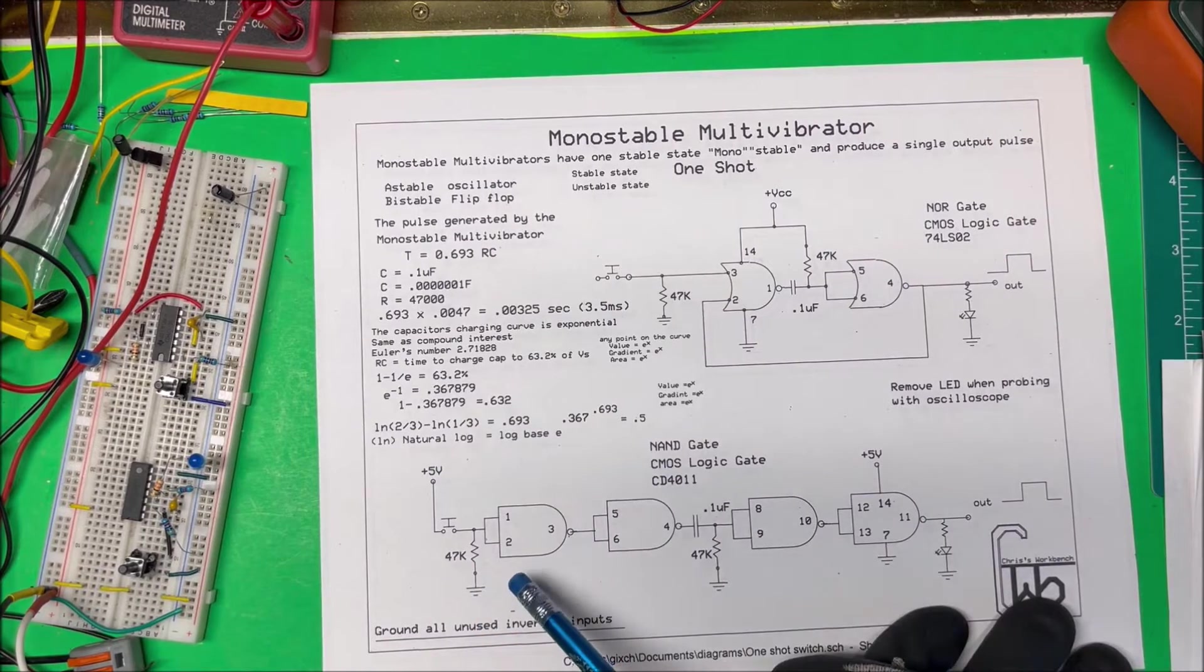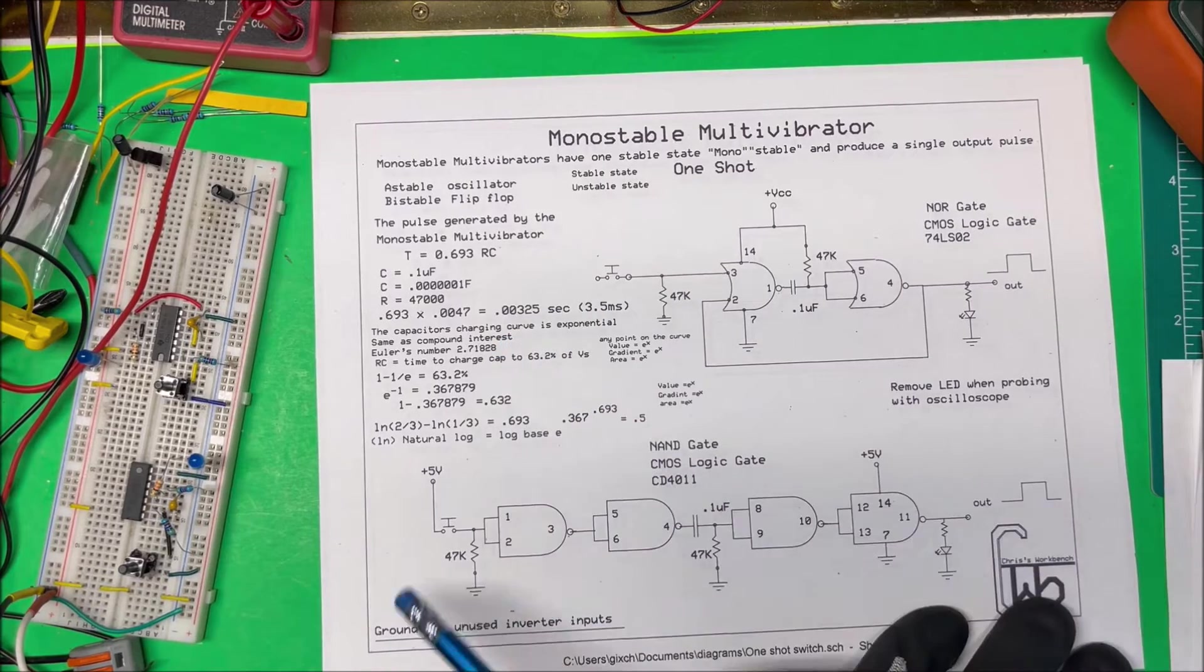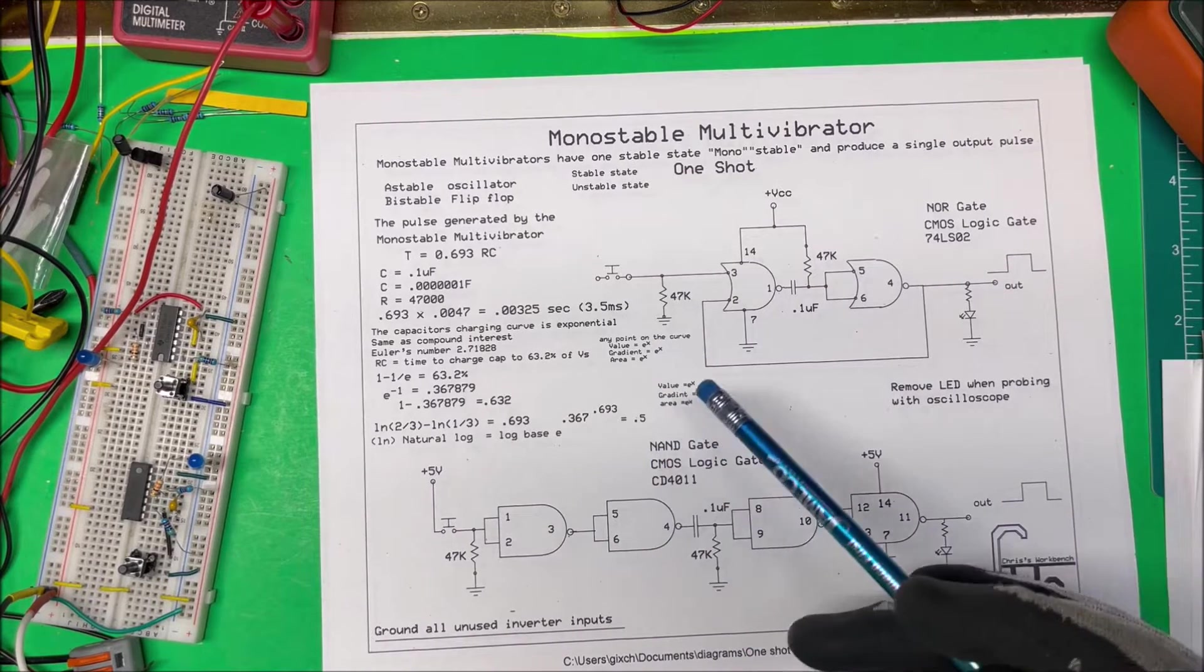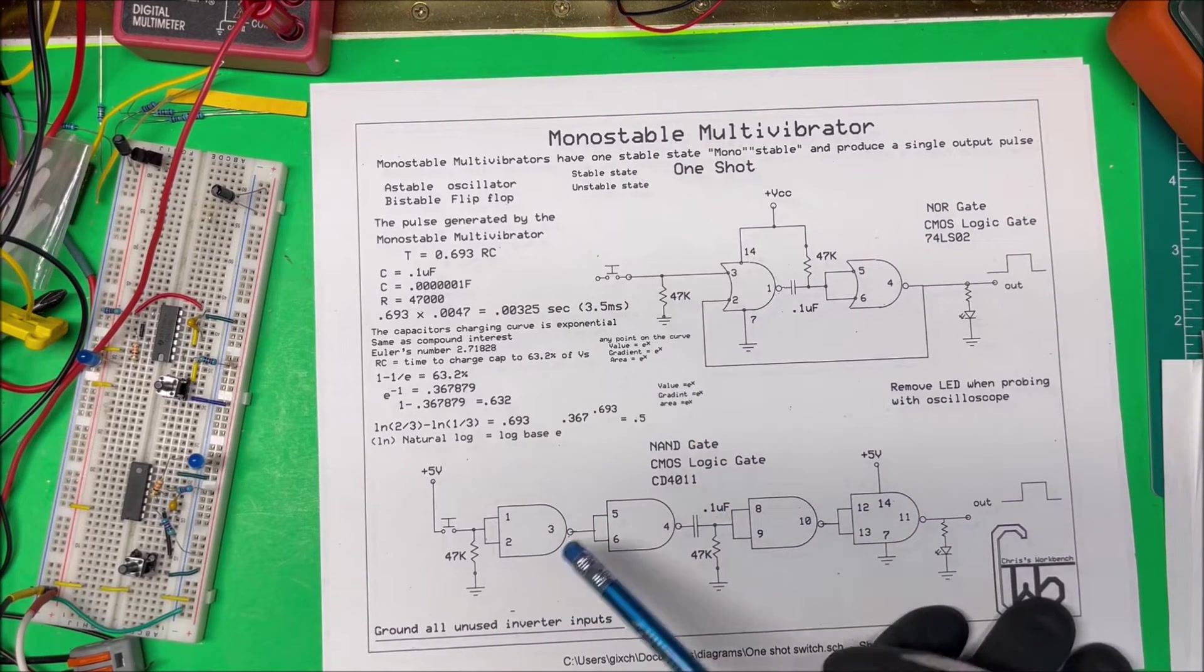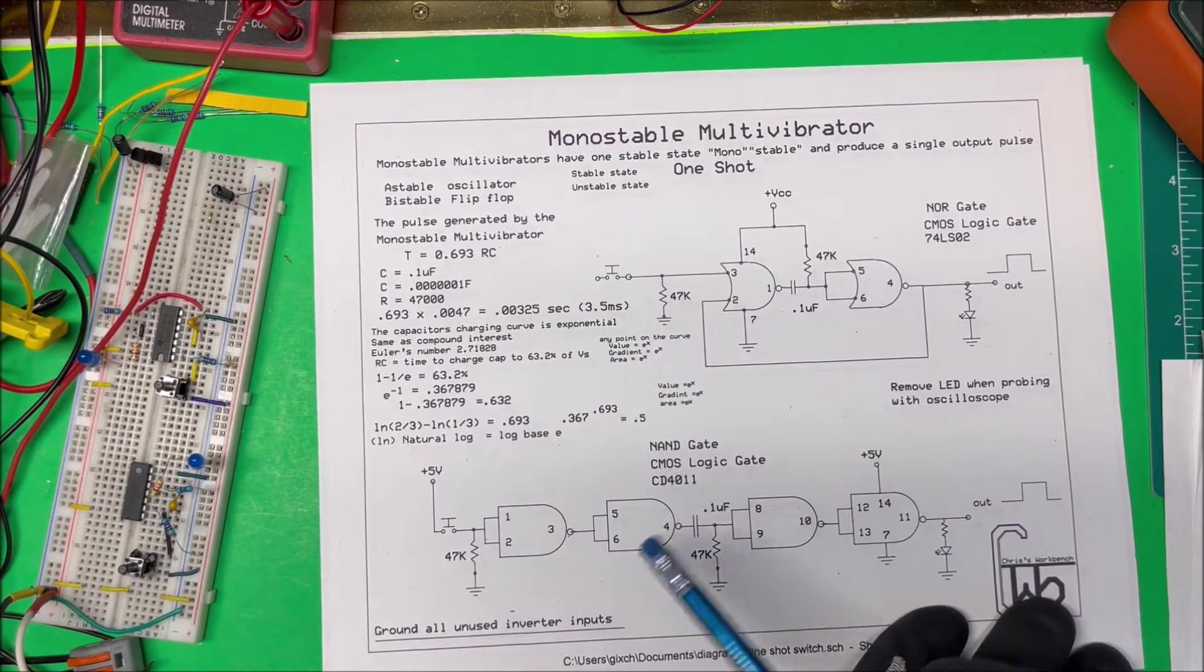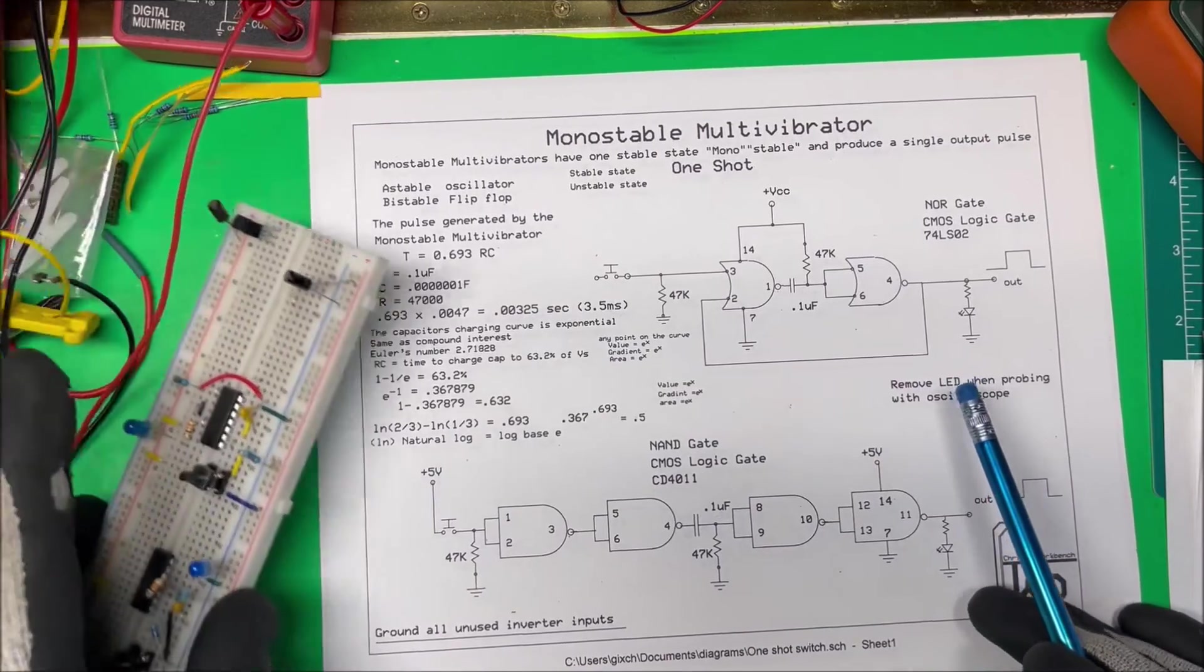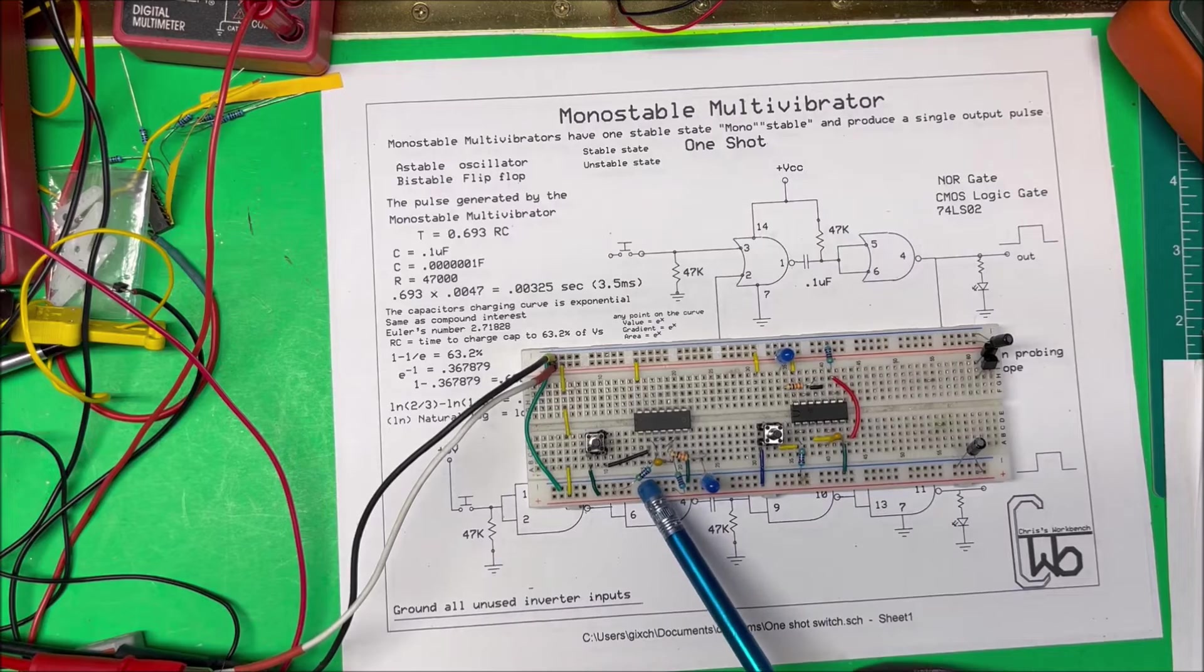So that's where that number comes from, and this e makes everything easier to work with because if you have a point on a curve and give it a value of e to the x, then the gradient of that point is going to be e to the x and the area underneath that curve is going to be e to the x. But we don't have to worry about that, we're just going to look at this number right here. I put a unit together here and we'll see if it works. This one happens to be the NOR gate.